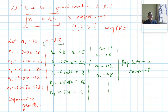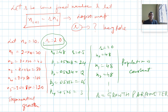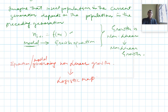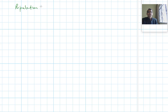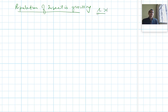So this factor r plays a very important role and is known as the growth parameter. Here we have taken a very simple example of population growing or decaying. Let us now take a more realistic example, assuming the population of insects is growing, meaning the growth parameter r is always greater than one.